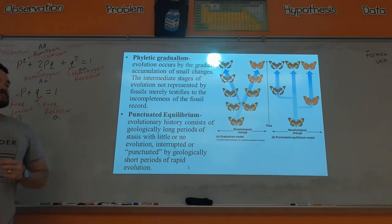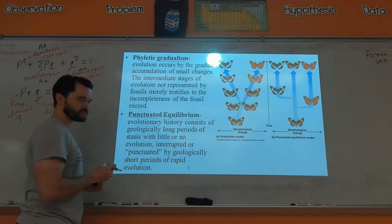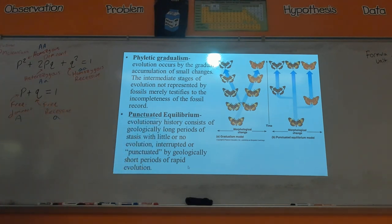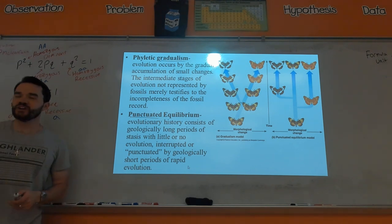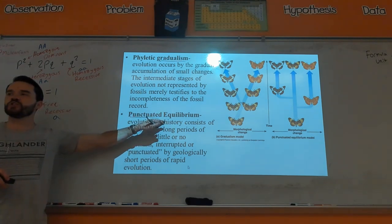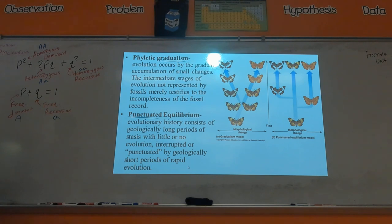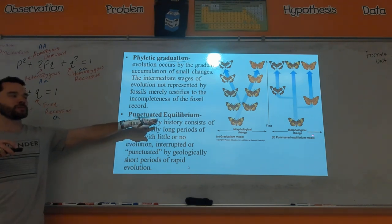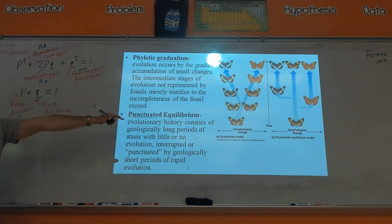Now the other side of the spectrum would be something called punctuated equilibrium. So if you punctured your lung—you got a hole in your lung, maybe got shanked in your lung—that would be something that's very drastic. So punctuated equilibrium would say, and when they say equilibrium they're saying we broke genetic equilibrium, so things are evolving.